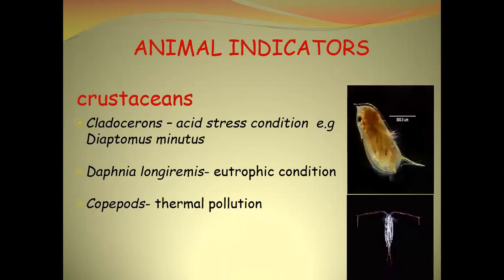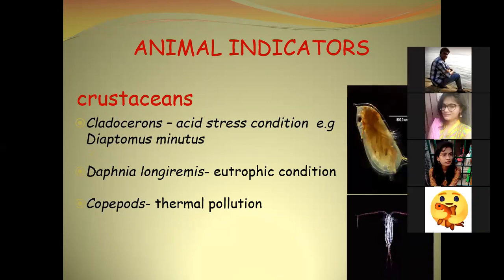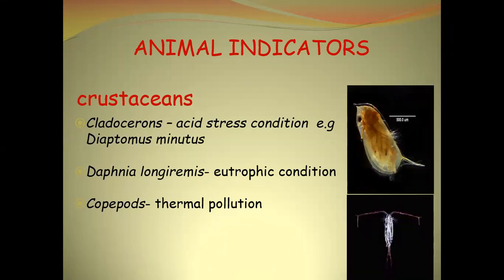Animal indicators: Cladocerans — such as Daptomus, Daphnia, and Moina — grow in acidic conditions. Daphnia longiremis grows in eutrophic conditions, whereas copepods grow in areas of thermal pollution. Where thermal pollution is present, the abundance of copepods will be high.